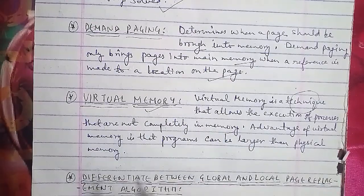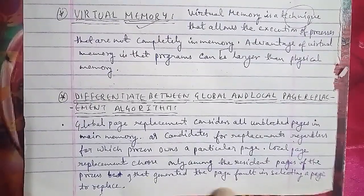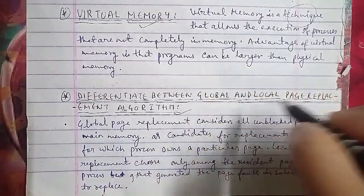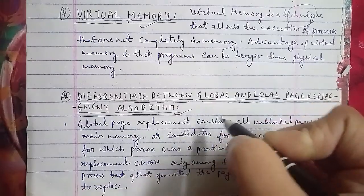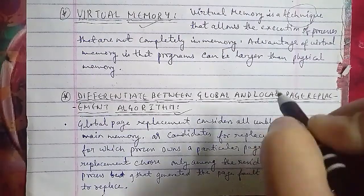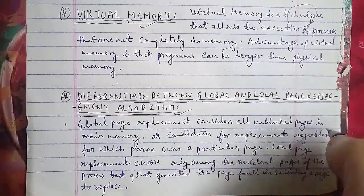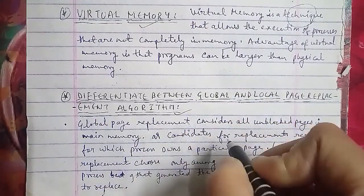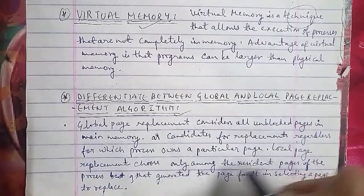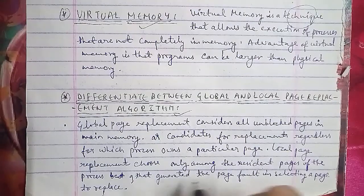Difference between global and local page replacement algorithm: global page replacement considers all unblocked pages in memory as candidates for replacement, regardless of which process owns the page. Local page replacement chooses only among the resident pages of the process that generated the page fault when selecting a page to replace.